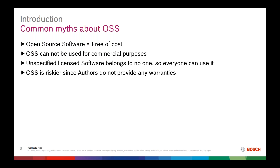The next myth is that OSS is riskier since authors do not provide any warranties. Even Microsoft releases some software under OSS licenses, and you are safe to use both proprietary and open source software as long as you use it wisely and within compliance terms. Finally, OSS software does not have bugs or vulnerabilities is also a myth. OSS does have bugs and vulnerabilities, which is why it is essential to address these in OSS governance so that bugs and vulnerabilities are known before the product goes to market.